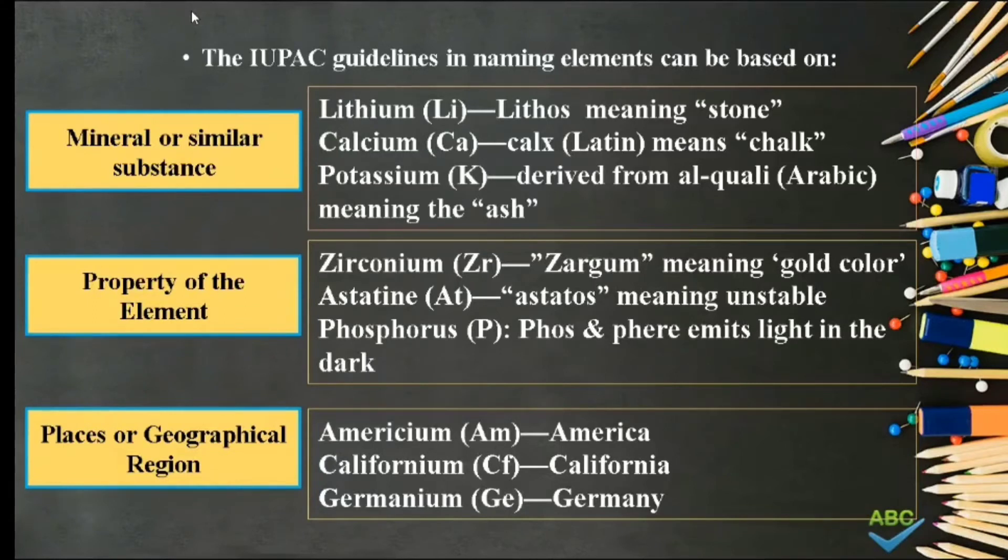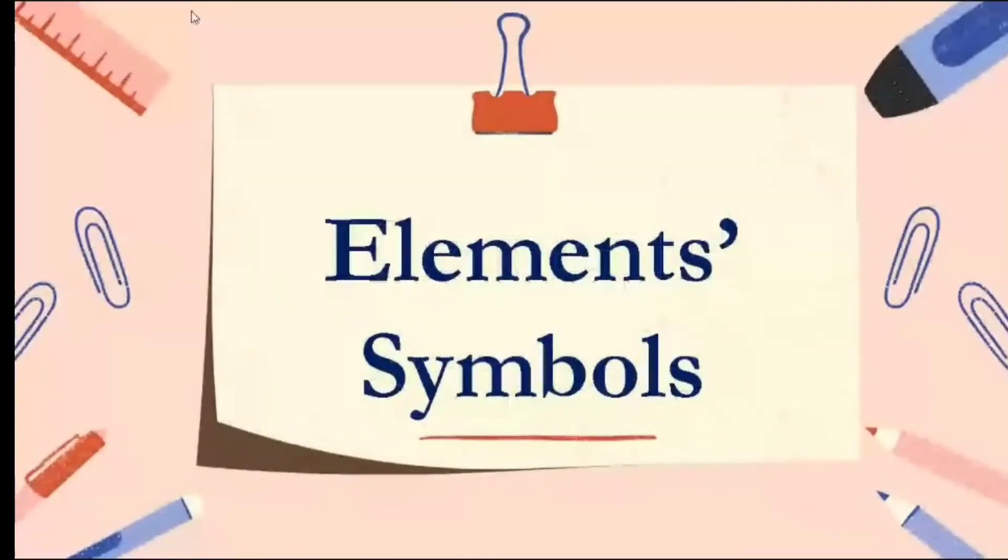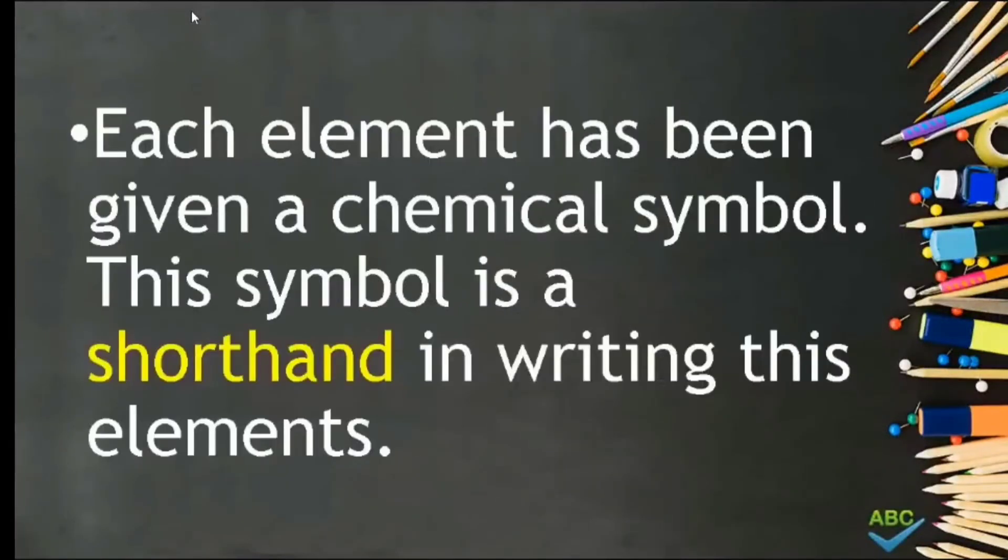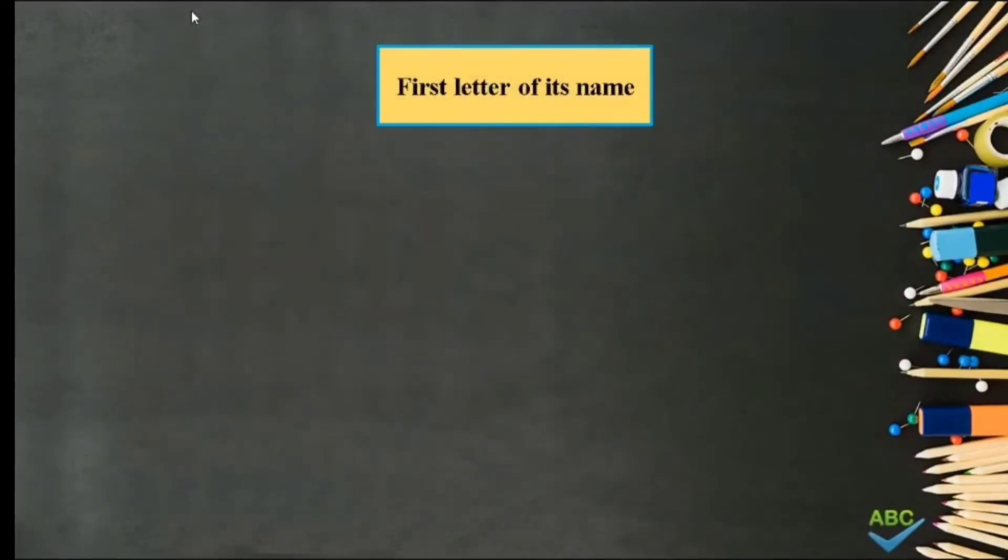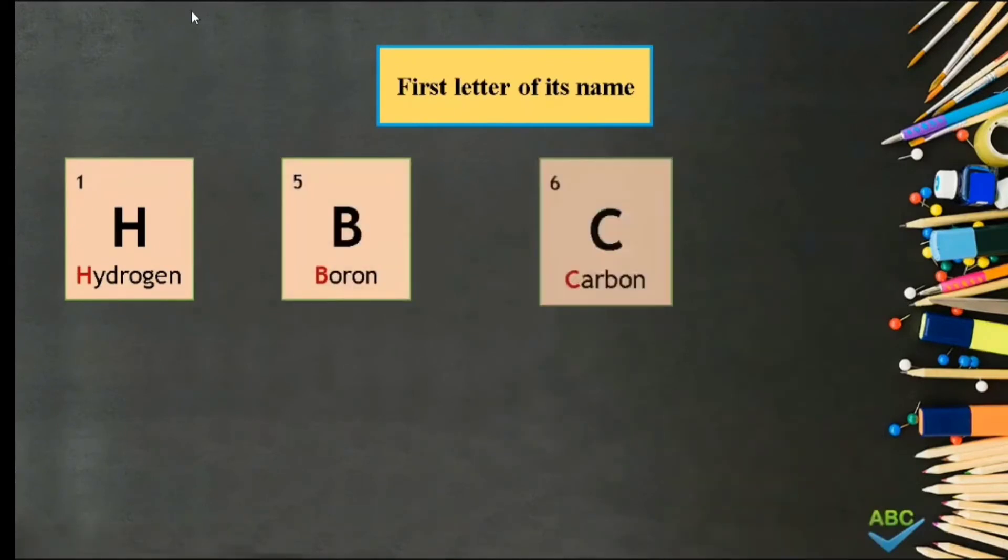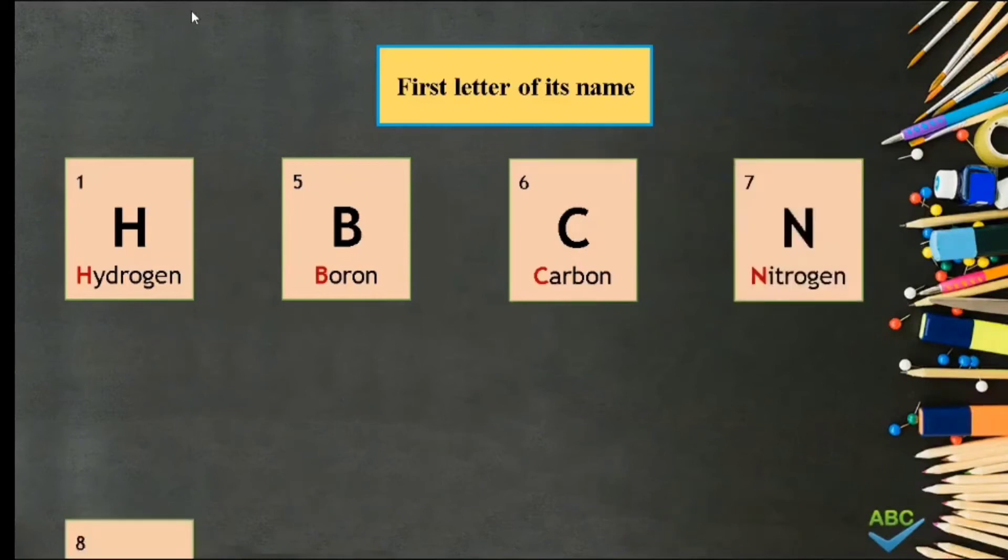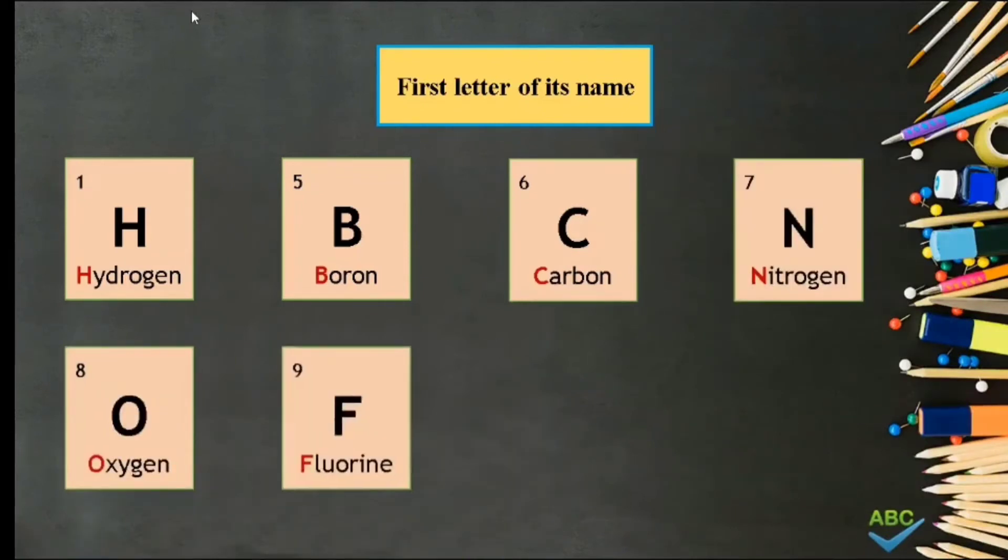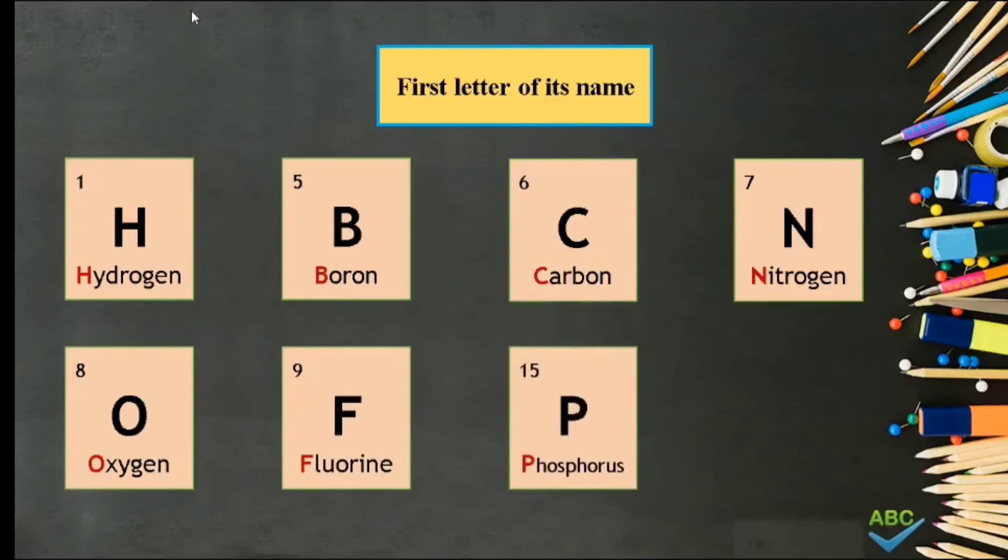Elements' chemical symbols. Each element has been given a chemical symbol. This symbol is a shorthand in writing these elements. Number 1. Based on the first letter of its name. Examples are H Hydrogen, B Boron, C Carbon, N Nitrogen, O Oxygen, F Fluorine, P Phosphorus, and S Sulfur.